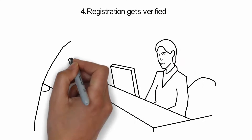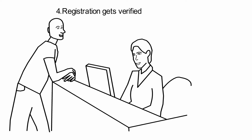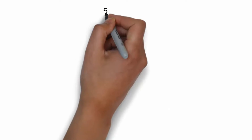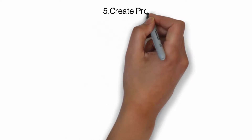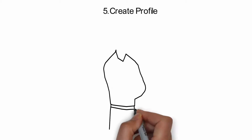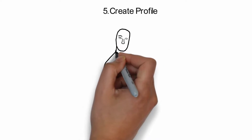At MEM, our licensing officers will receive your registration information and verify your identity and, if needed, your licence details. Once everything has been received in good order, the licensing officer will create a profile on the portal for each requested user.